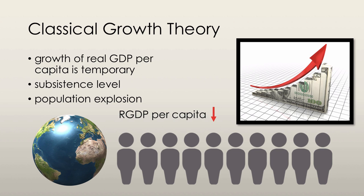All that happens is that we have a decrease in real GDP per capita, because we have the same amount of real GDP but we have way more people, so it has to be spread out over these people, and so real GDP per capita decreases.